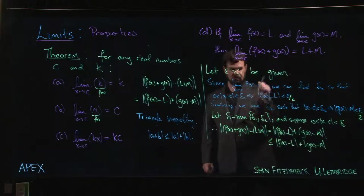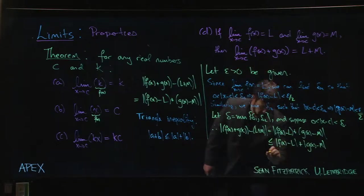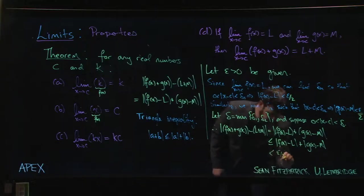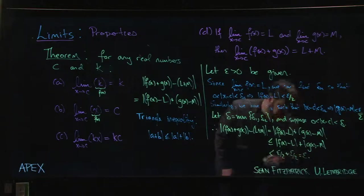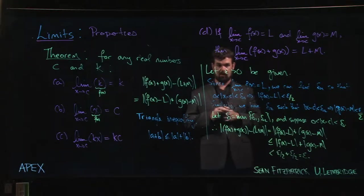And these, in turn, by our assumptions, are both less than epsilon over 2. Adding epsilon over 2 to itself gives us epsilon, and that completes the proof.